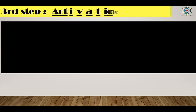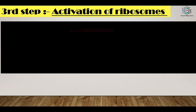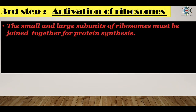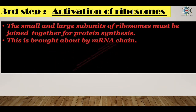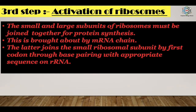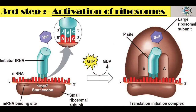The third step is activation of ribosomes. The small and large subunits of the ribosomes must be joined together for protein synthesis. The mRNA chain brings about this joining — it joins the small ribosomal subunit at the first codon through base pairing. The combination of the two is called the initiation complex. The large subunit then joins the small subunit forming an active ribosome. Activation of ribosomes by mRNA requires a proper concentration of magnesium ions. This complete structure is known as the translation initiation complex.